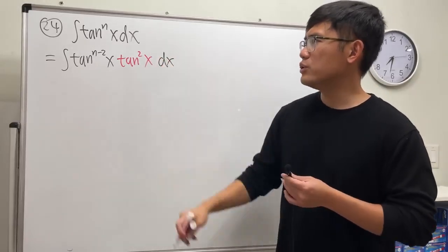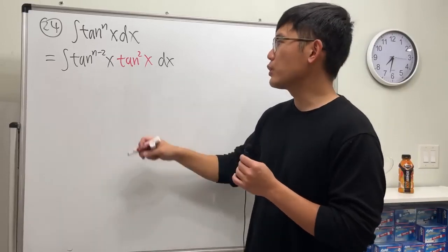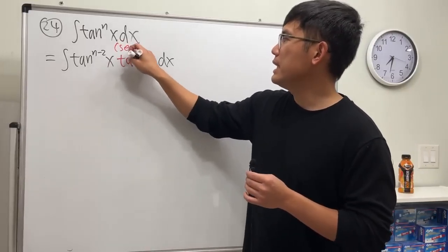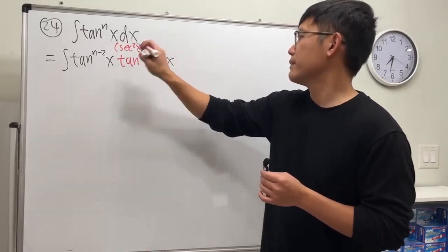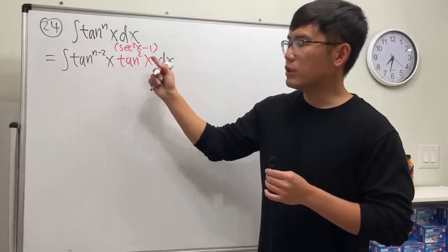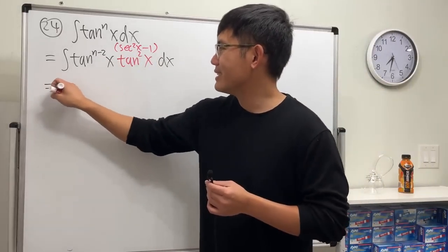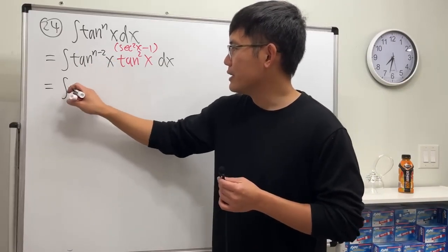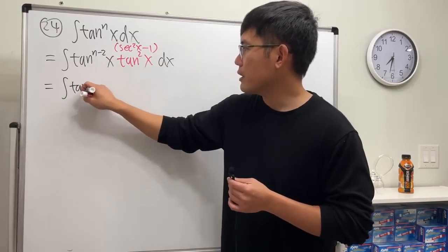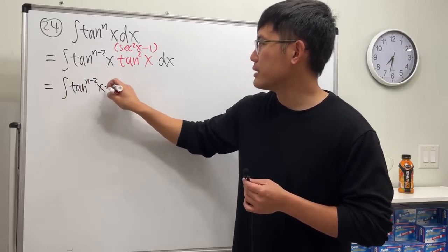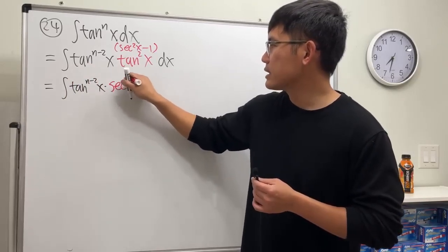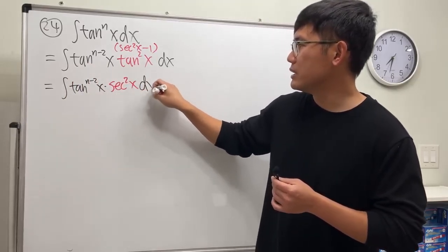And what's tangent square though? Tangent square is the same as secant square x minus 1. Now let's just multiply this in, and you see that this is so nice, because the first part will just end up as the integral of tangent to the n minus 2, x, times secant square x, and I would like to close this right here.